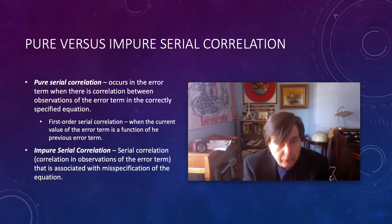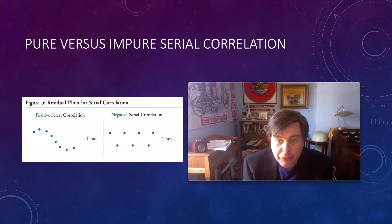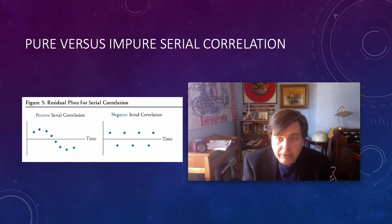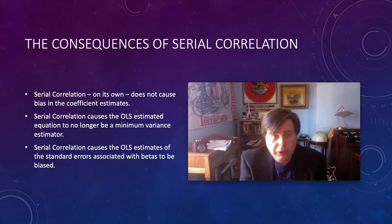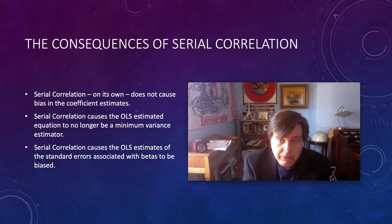Pure serial correlation occurs when there's correlation between observations of the error term in a correctly specified equation. First-order serial correlation occurs when the current value of the error term is a function of the previous error term. Within those ideas of pure and impure serial correlation, we can have positive serial correlation and also negative serial correlation. Importantly, serial correlation does not cause bias in your estimated coefficients.